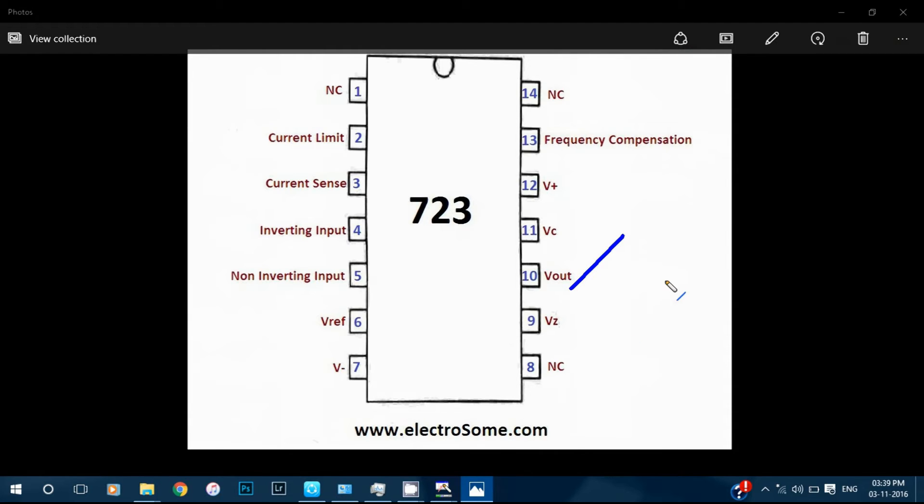The tenth pin is Vout. It is the output terminal of the IC. Usually output voltage ranges from 2 to 37V. This pin can provide up to 150mA current.